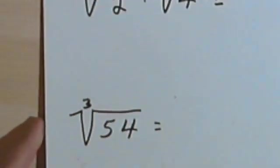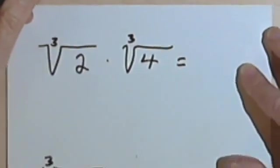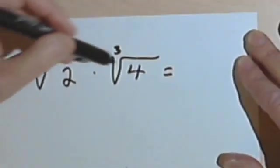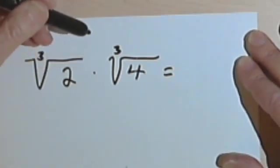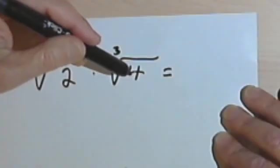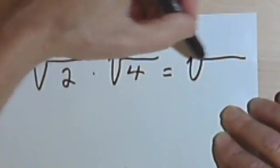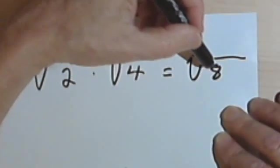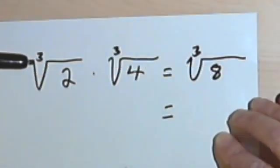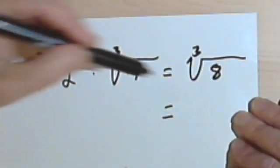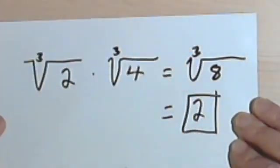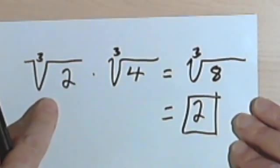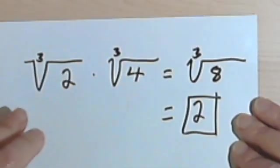Now we've been talking about square roots, but really this same basic product rule will hold true for any kinds of roots. Here's an example with cube roots. I've got the cube root of 3 times the cube root of 4. Neither of these is a perfect cube, but I can multiply 3 times 4 and get the cube root of 12 — wait, the cube root of 3 times 4 equals the cube root of 12... actually the cube root of 8. 8 is 2 to the third power, so the cube root of 8 is 2. Basically the same product rule principle we used with square roots.